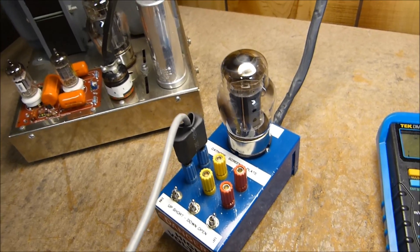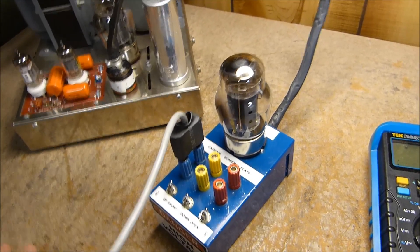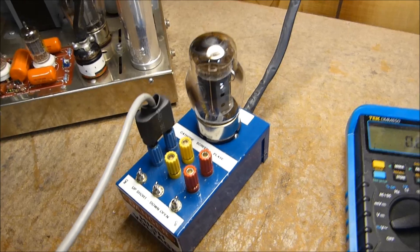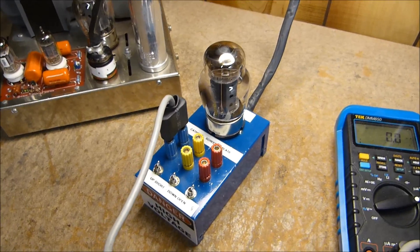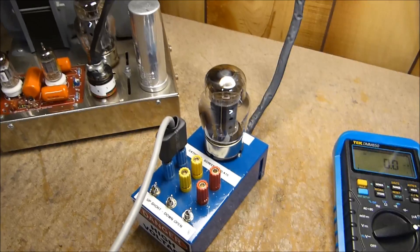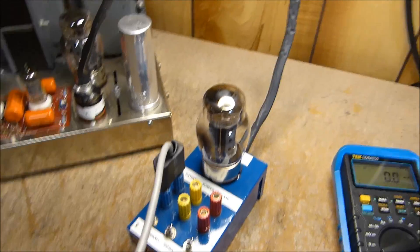But this is actually putting the milliamp meter, the current meter, in series with the plate, the screen, and the cathode. So it's spot on. I hope this helps.